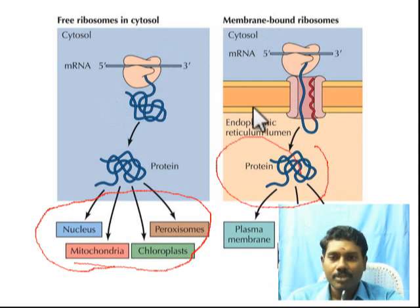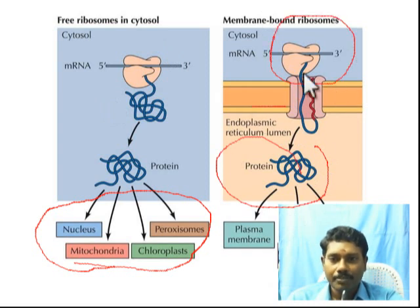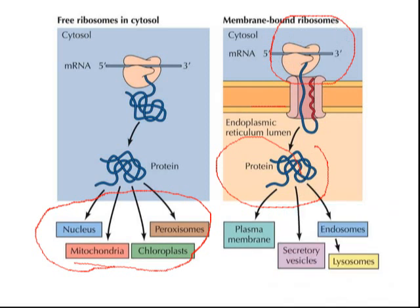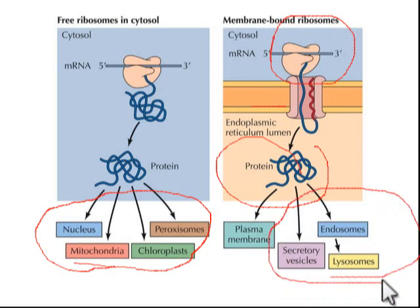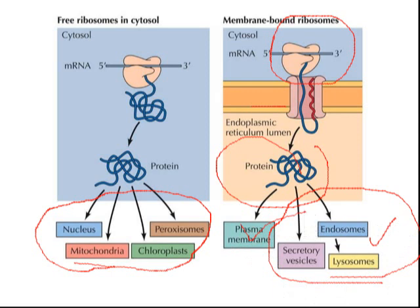The bound ribosomes on the endoplasmic reticulum produce proteins that go to lysosomes, secretory vesicles, endosomes, and the plasma membrane — including transmembrane integral proteins and peripheral proteins. These are membrane-bound ribosome products.